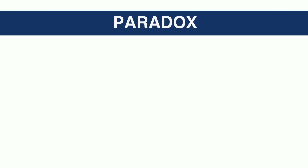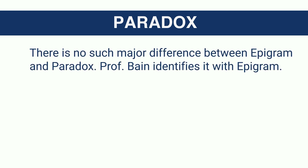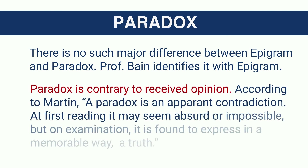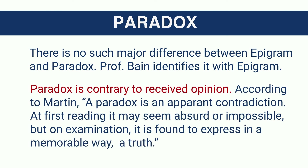What is a paradox or paradoxical statement? There is no major difference superficially between epigram and paradox. Professor Bain identifies epigram with paradox — according to him there is no major difference. Paradox is contrary to received opinion. According to Martin, a paradox is an apparent contradiction; at first reading it may seem absurd or impossible, but on examination it is found to express in a memorable way a truth — which is the very essence of epigram as well.